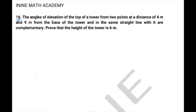The next problem: the angle of elevation of the top of a tower from two points at a distance of 4 meters and 9 meters from the base of the tower, in the same straight line with it, are complementary. The characters involved are a tower and two points — one at 4 meters and another at 9 meters from the base of the tower.